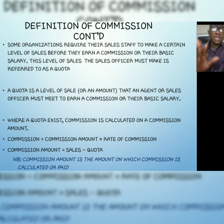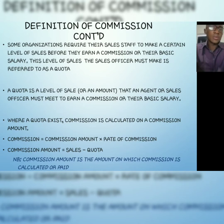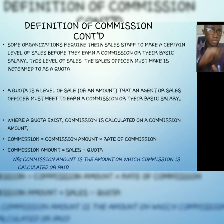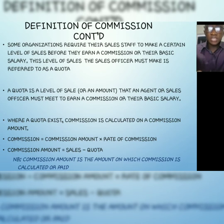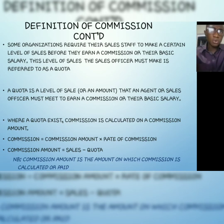Some organizations require their sales staff to make a certain level of sales before they earn commission or their basic salary. This level of sales the officer must make is known as a quota. A quota is a level of sale or an amount that an agent or sales officer must meet to earn a commission or their basic salary. In some organizations, they give you a target to meet before they give commission.